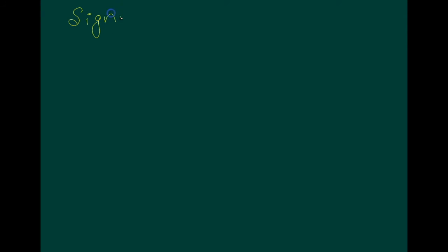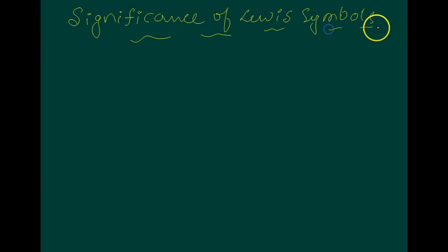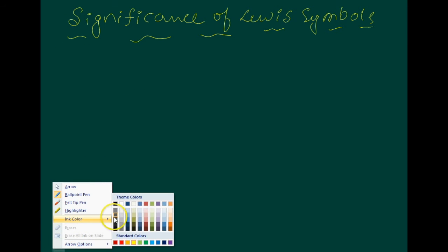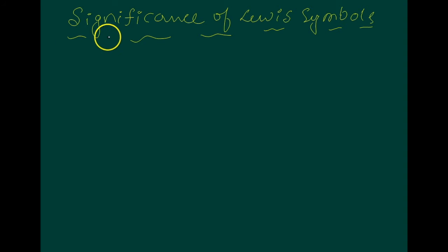Next is the significance of the Lewis symbol. Now you have an idea about what a Lewis symbol is, and the significance of the Lewis symbol relates to the number of dots.